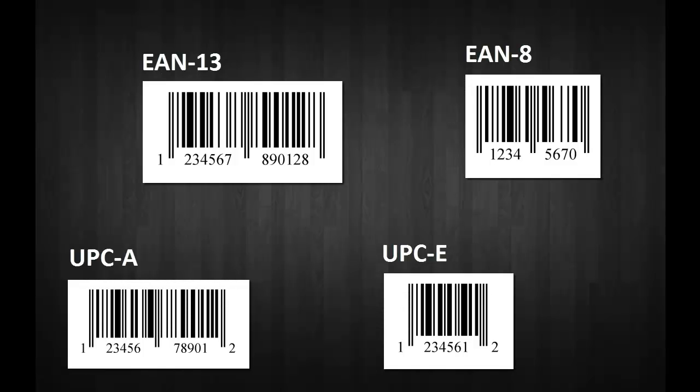UPC and EAN barcodes are used to uniquely identify a product for retail checkout or tracking purposes. The ID Automation UPC EAN font package is a single font used to create all UPCA, UPCE, EAN8, EAN13, JAN, ISBN, and Bookland barcodes.